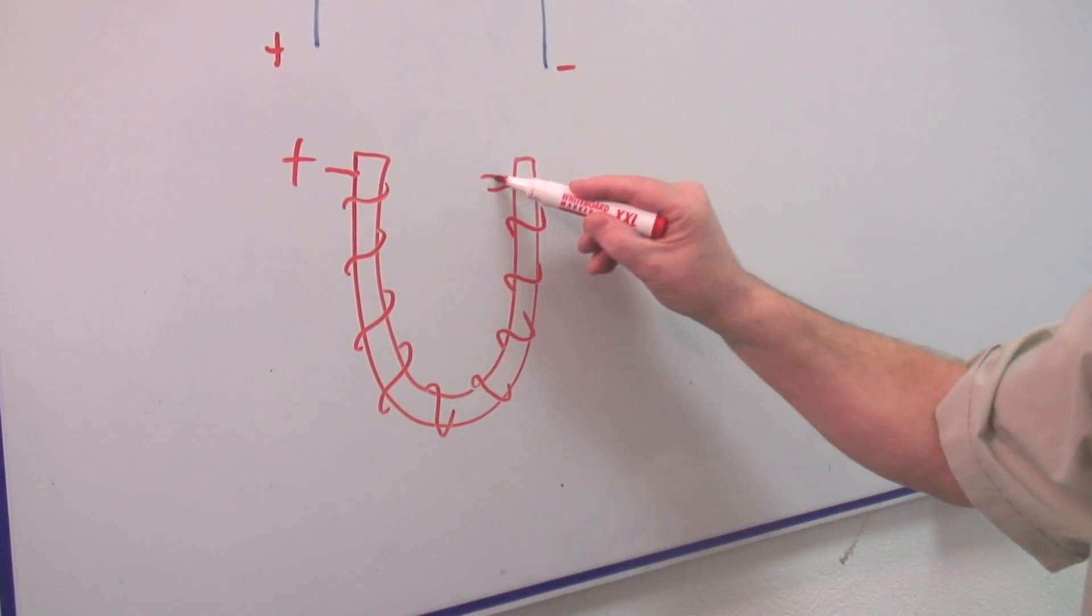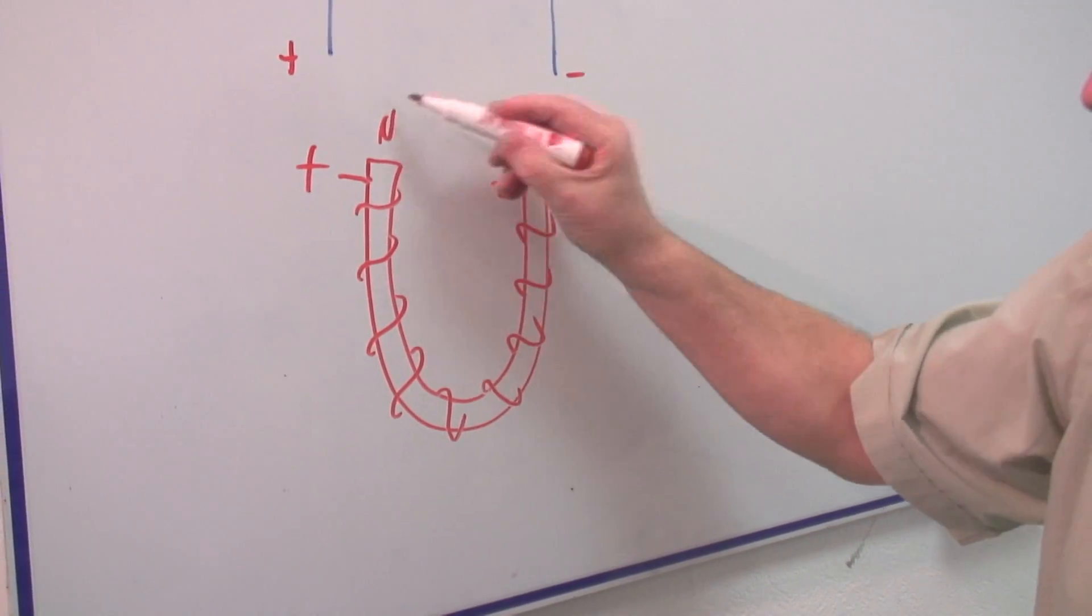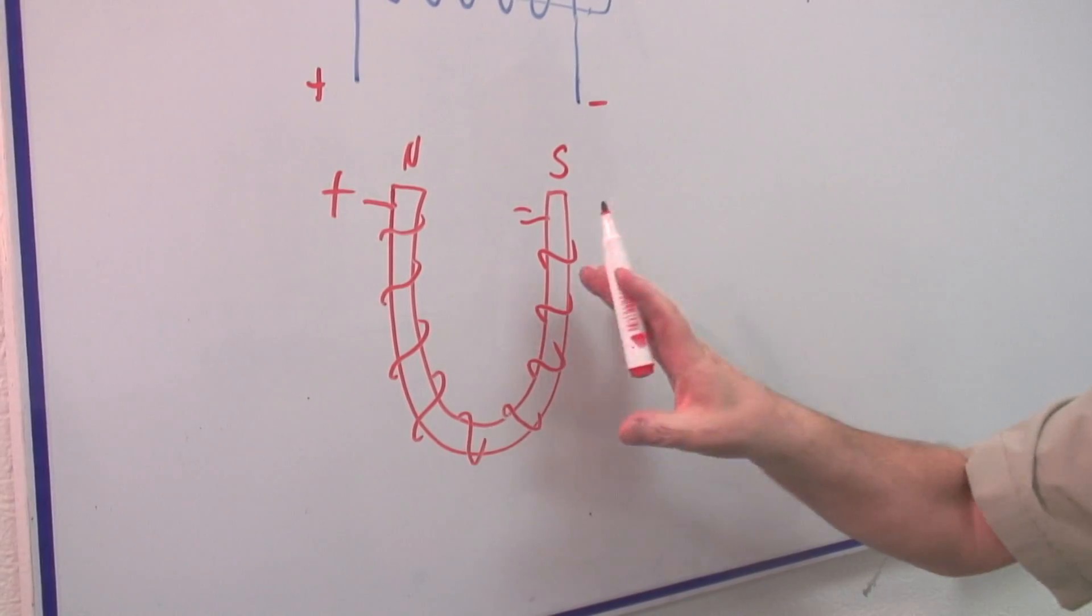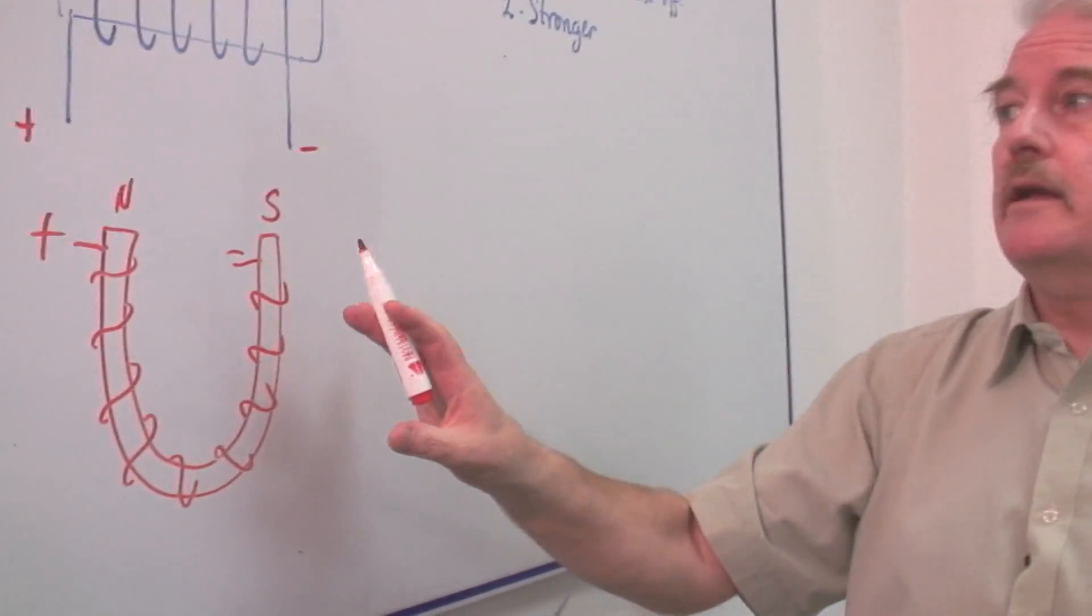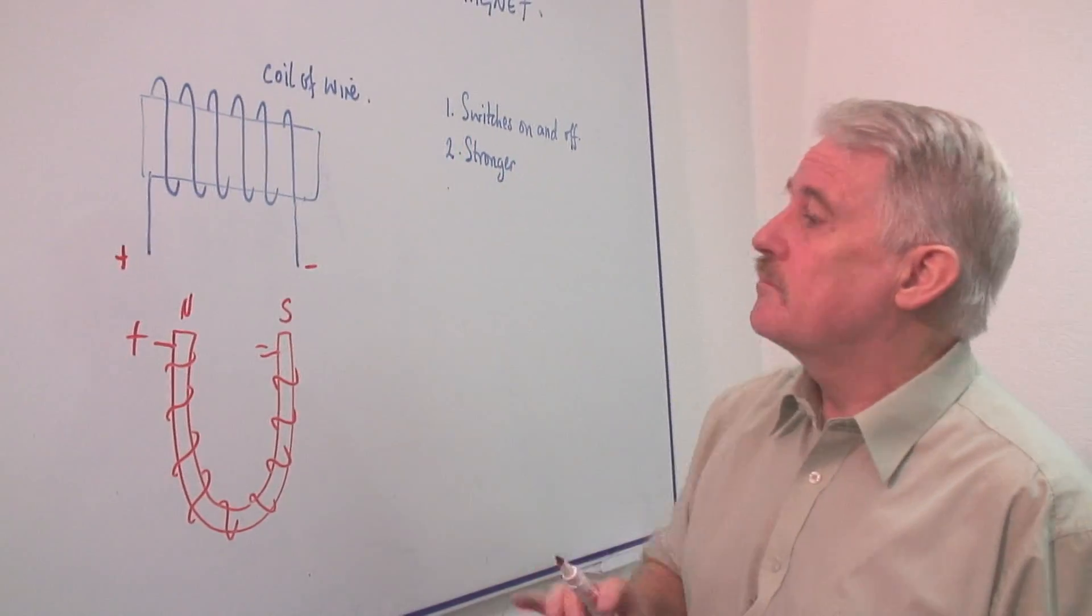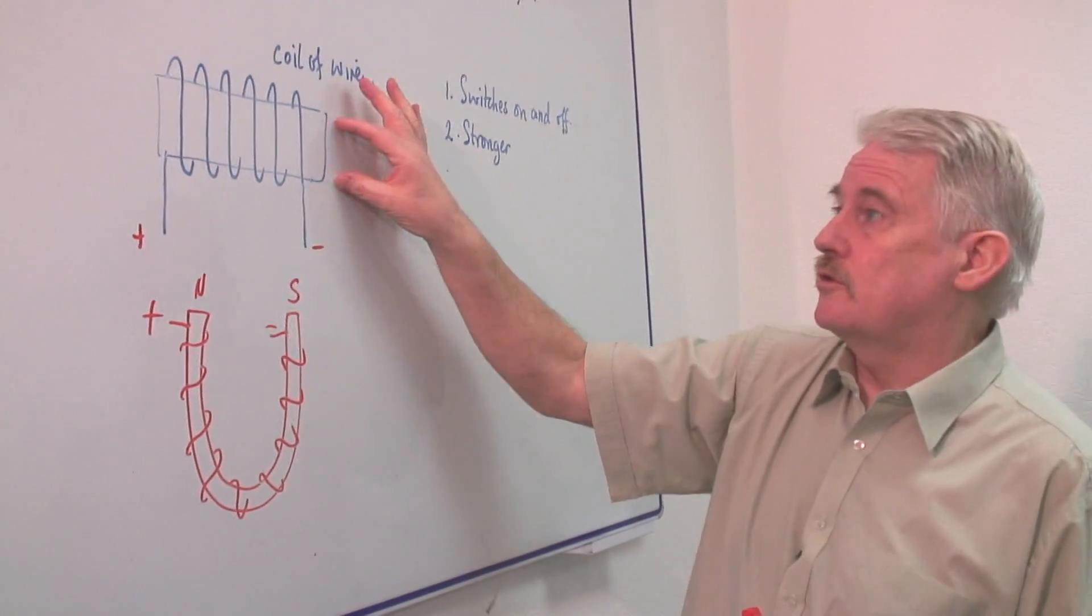If you pass a current through that, one end will be a north pole and the other will be a south pole. This is very useful for making very strong magnets, but if we don't need it to be that strong, we can use a straight piece of cardboard or something like that.